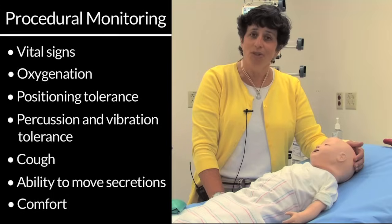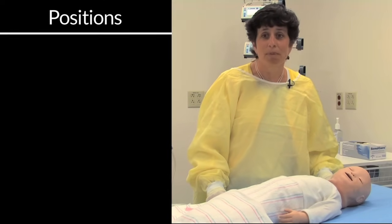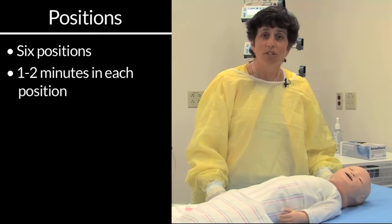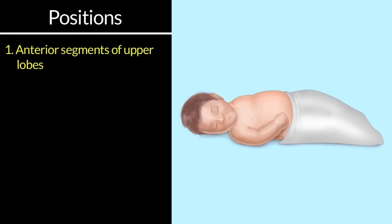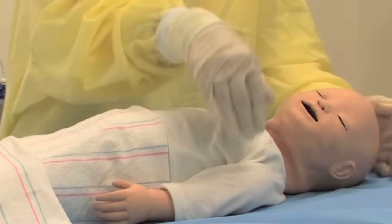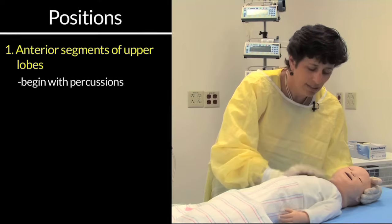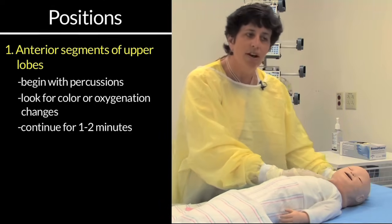I'm going to put on my personal protective equipment. Now that I've assessed my patient and prepared the family and the patient for the procedure, I'm going to start. I'll do six different positions on the patient — normally one to two minutes in each position, though for the sake of this video I won't do the full duration. I'll start with the anterior segments of the upper lobes. The patient should be supine in a flat position, and I'll percuss above, between the nipple line and the clavicle line, first on the right for one to two minutes, then on the left. I'd be noting how the patient is tolerating it and looking for any color or oxygenation changes.